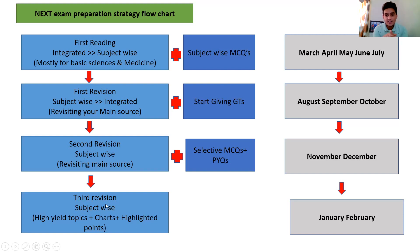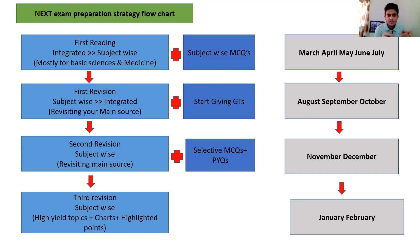The third revision is a high-end revision that will set your rank. Go through high-yield topics — I will share these for all subjects in due time. Make charts for volatile topics: things that get forgotten easily, like drug of choices and classifications you can't remember. Keep revising these charts toward the end, along with highlighted points from your notes. After first reading and two revisions you will remember a lot, so focus only on those things that keep demanding your attention. Attribute the last two months to this phase.